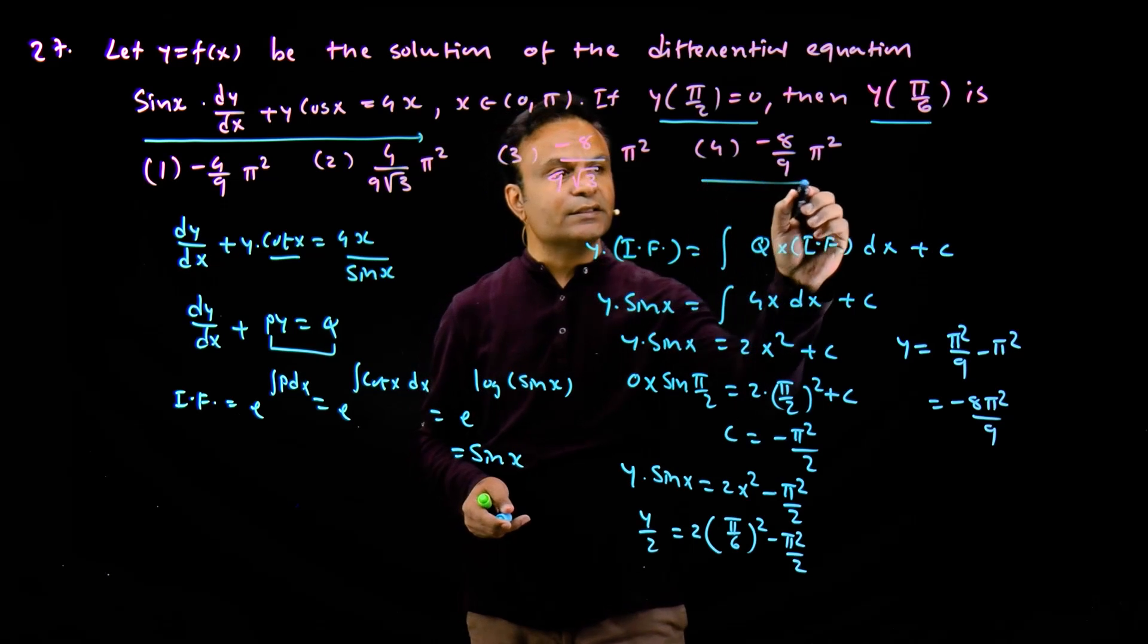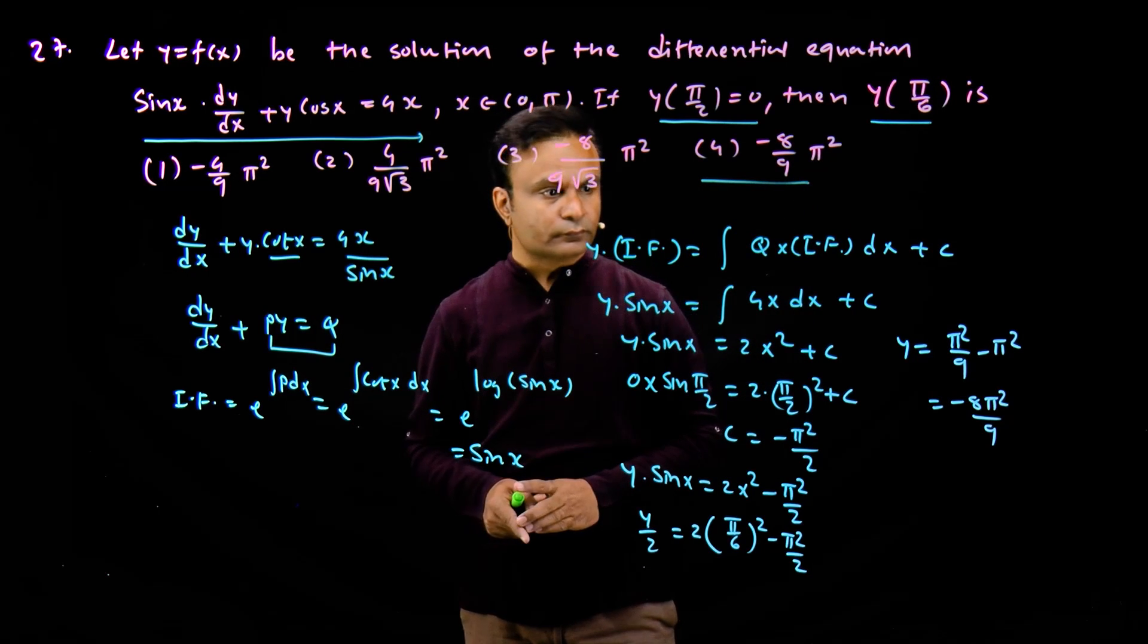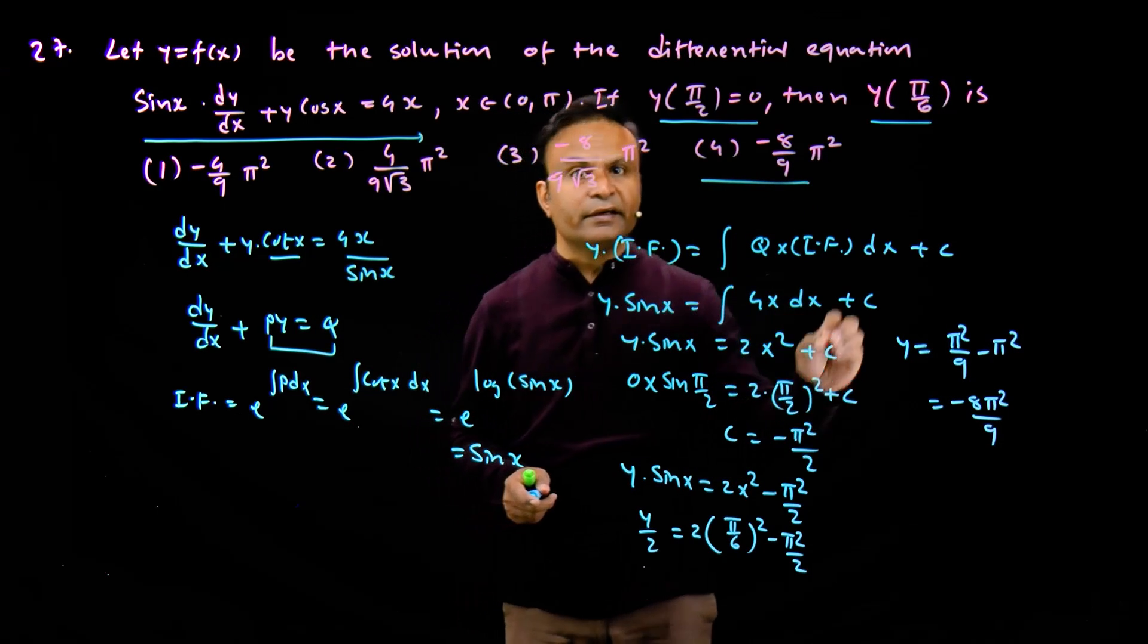So the answer is minus 8 pi square upon 9. The answer key is 4. This is a simple question on linear differential equations.